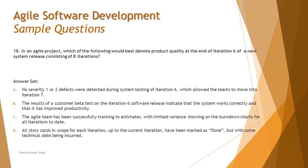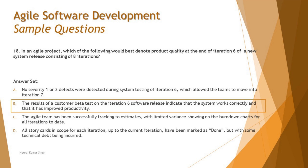Option D says: all story cards in scope for each iteration up to the current iteration have been marked as done, but with some technical debt being inaccurate. This is also a good indication of team velocity but does not give information on the quality of the product. So the right answer is B: the result of a customer beta test on the iteration six release indicates the system works correctly and has improved productivity.